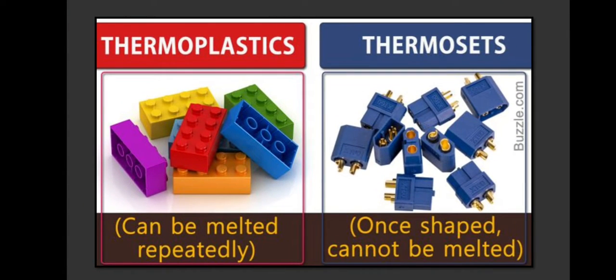You can see on your screen thermoplastics can be melted repeatedly and you can change the shape of products as per your choice, whereas thermosetting plastic, once the shape is given, cannot be melted even after providing heat and no other shape can be given to them.